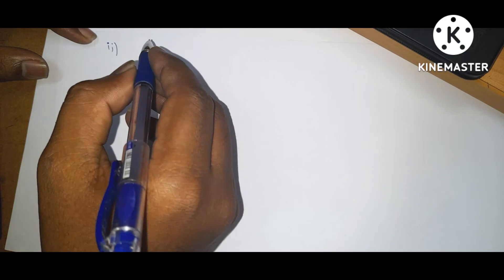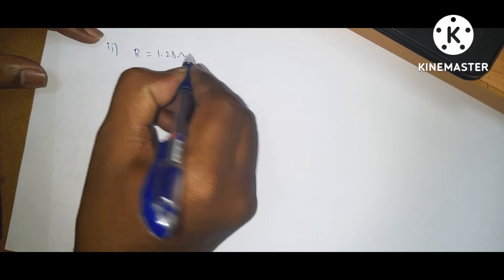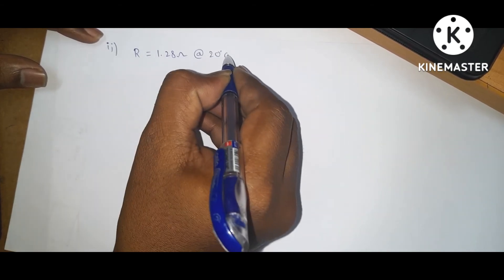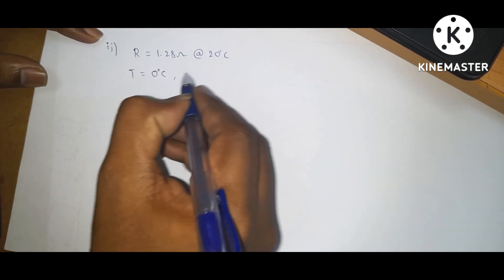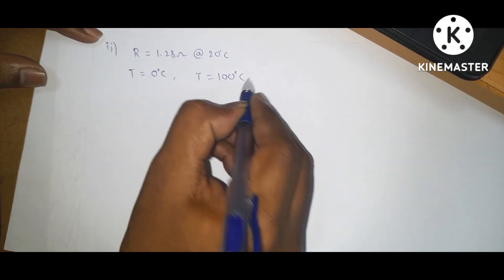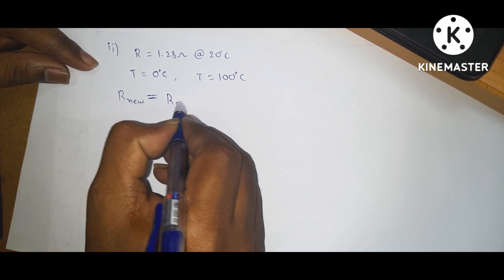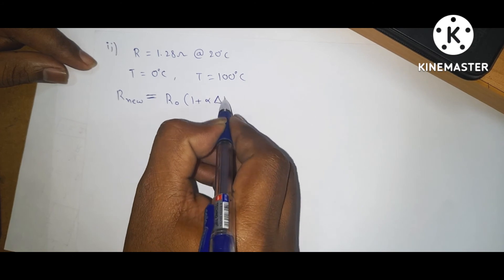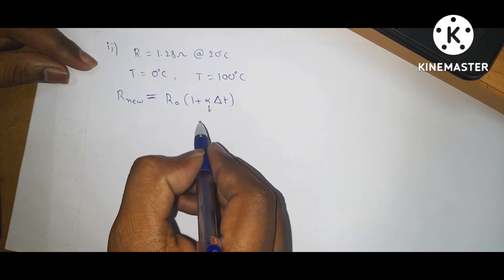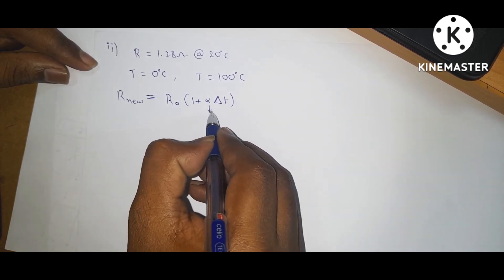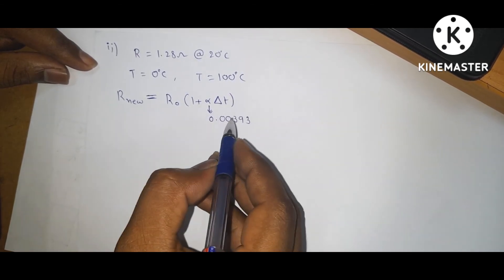For question two, the previous resistance of 1.28 ohms is at 20 degree centigrade. Find the resistance at T equal to 0 degree centigrade and T equal to 100 degree centigrade. The formula for temperature dependence is R_T is equal to R0 into 1 plus alpha into delta T. Here alpha is the temperature coefficient, which for copper is 0.00393 at 20 degree centigrade.